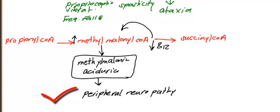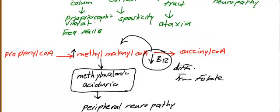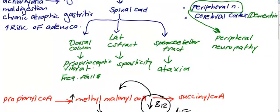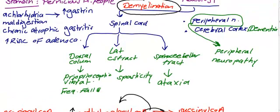This mechanism — methylmalonic aciduria — is specific to vitamin B12 deficiency and can easily differentiate it from folate deficiency. The underlying pathology across all neurological systems is demyelination: affecting the cerebral cortex, spinal cord, and peripheral nerves. Specifically, when the dorsal columns of the spinal cord are affected, there is a disease called subacute combined degeneration of the spinal cord.